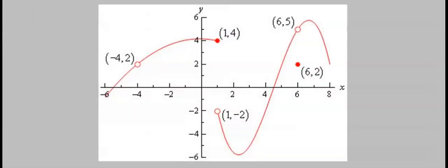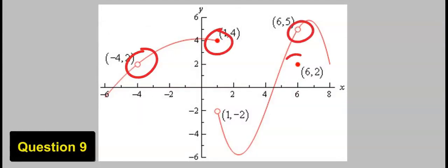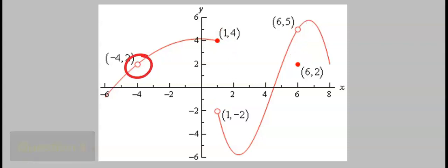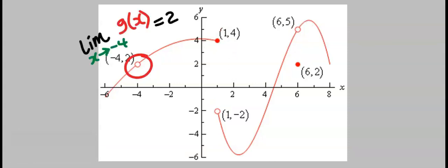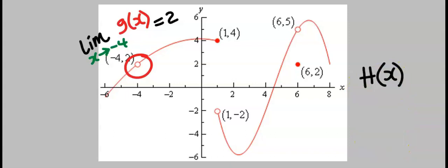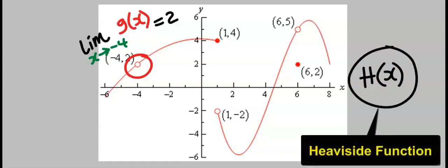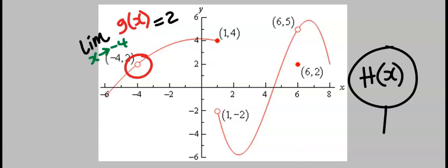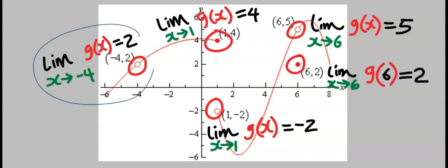Next, let's consider the limits of each of the points on the graph. For example, the limit of g(s) as x tends to minus 4 is 2. You can use g(x), h(x), f(s), or any small letter — it must be a lowercase letter, not a capital, because capital letters like this can mean something else, for example the Heaviside function.